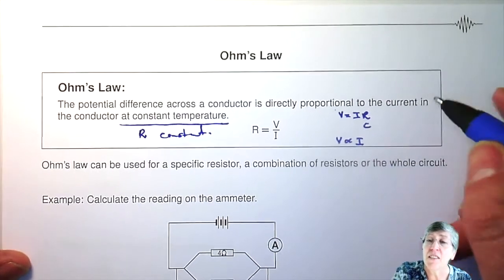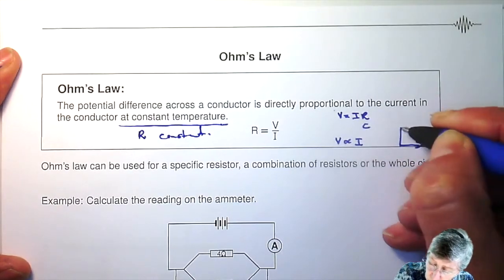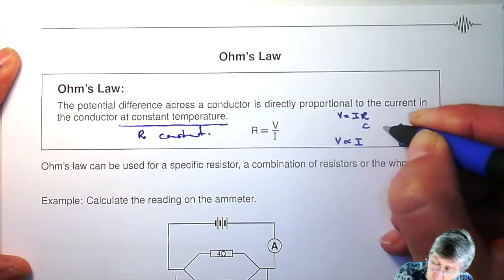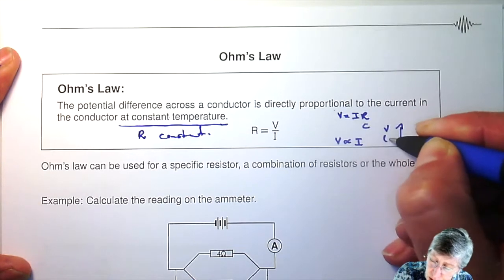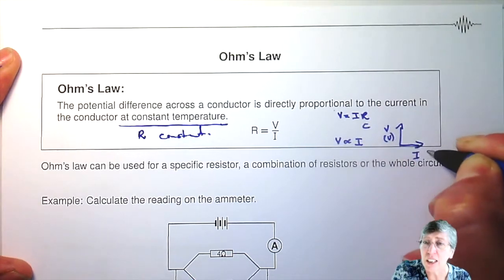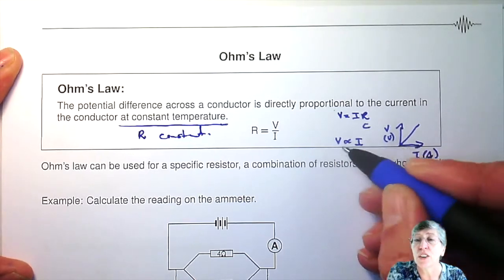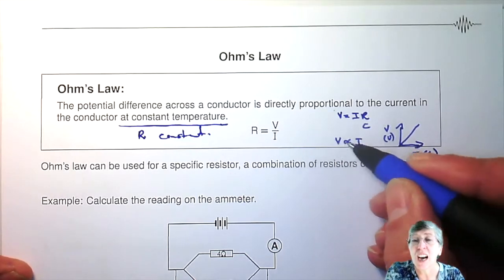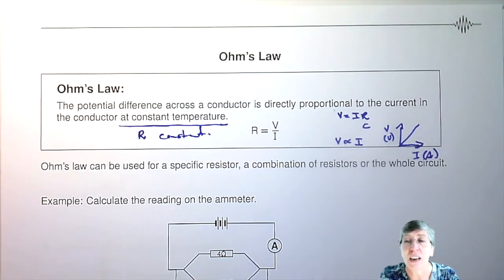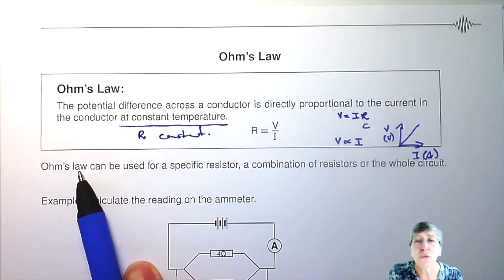And then obviously if you want to draw a graph of that with potential difference in volts and current in amperes, you will get a straight line through the origin because they are directly proportional to each other.